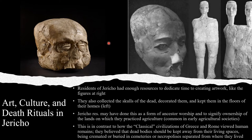The Jericho residents' attitude towards human remains stands in stark contrast to how the Classical civilizations of Greece and Rome viewed human remains thousands of years later. Greco-Roman people believed that dead bodies should be kept away from living spaces, and should either be cremated or buried in cemeteries and necropolises separated from where people lived.